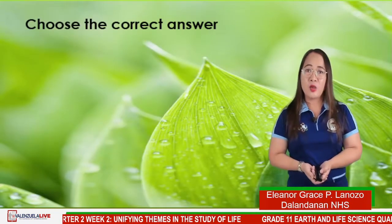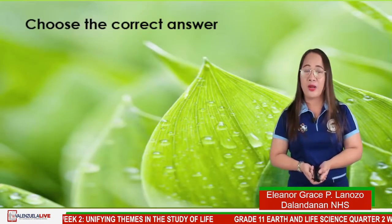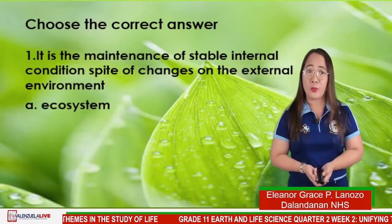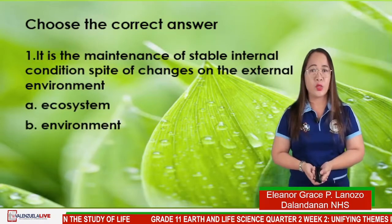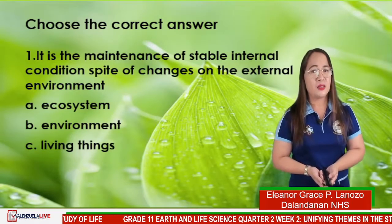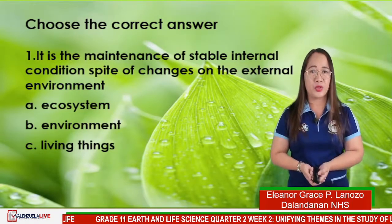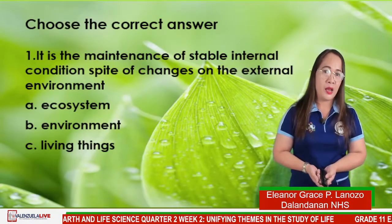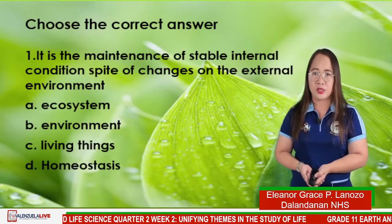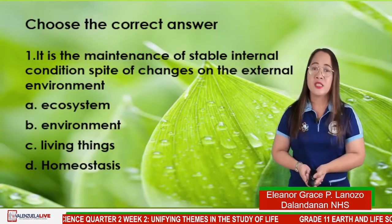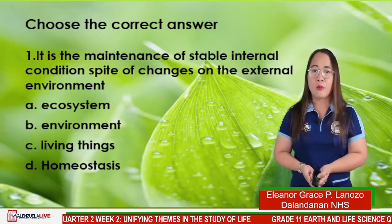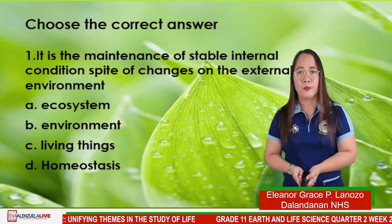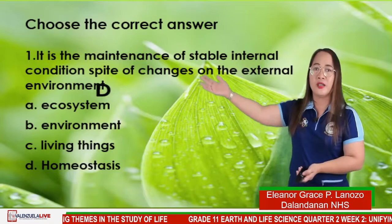Now lastly, choose the correct answer for our last activity. For number 1: it is the maintenance of stable internal conditions despite changes in the external environment. A — ecosystem, B — environment, C — living things, D — homeostasis. The answer is letter D.